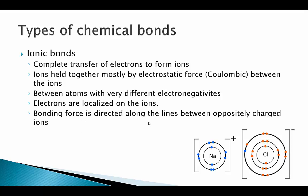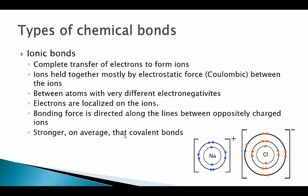Furthermore, the bonding force is directed along the lines between oppositely charged ions — between the sodium and the chlorine, that line between them is where the force pulls hardest. In an ionic compound we form a crystal lattice, where surrounding the sodium cation with chloride ions creates forces of attraction in particular directions, not just everywhere like in the electron sea model. On average, ionic bonds are the strongest type of chemical bonds.